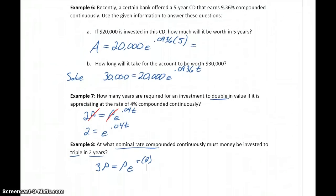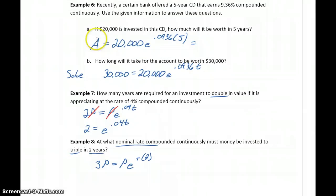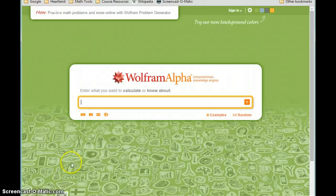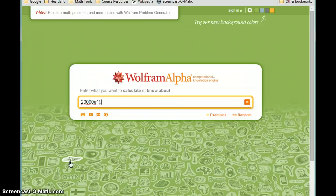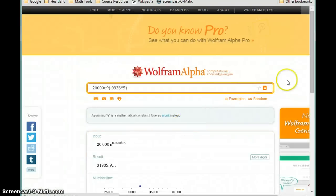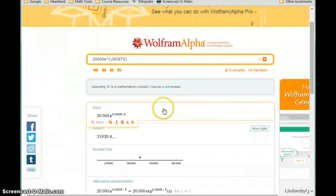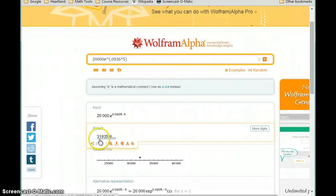So we have this set up for each of these problems. Let's go back, and then with Wolfram Alpha, we'll come up with our final answers for each of these. So in example 6, part A, we have this expression that we need to evaluate. So to do that, we can just type in 20,000, e to the, and then in parentheses, 0.0936, times 5. So again, always a good idea to check this input to make sure that matches what you were expecting to be typing and what you expected it to evaluate.